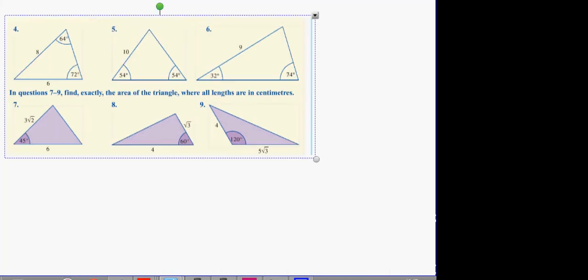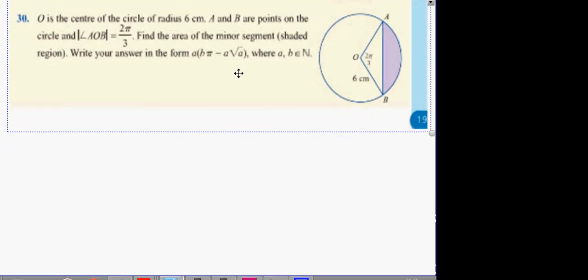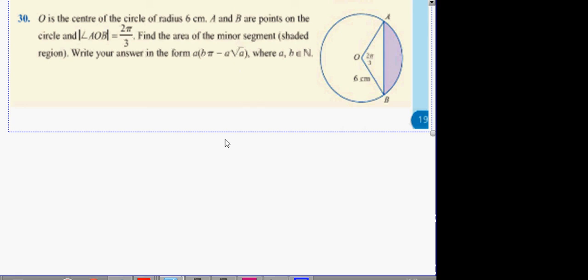Next question, we're going to go to question 30. O is the center of the circle, radius 6. A and B are points on the circle and the angle AOB is 2π over 3. Find the area of the minor segment shaded region and write your answer in this form here.